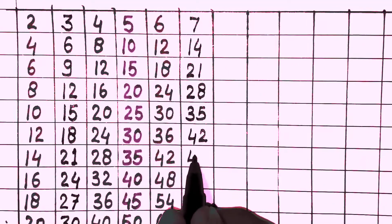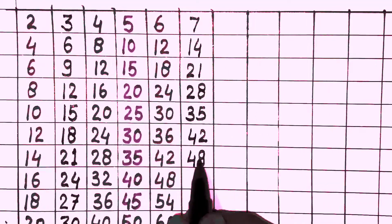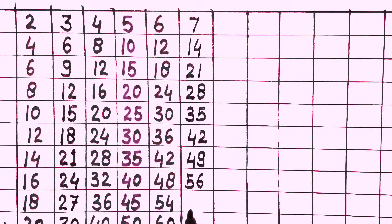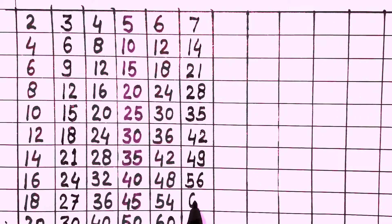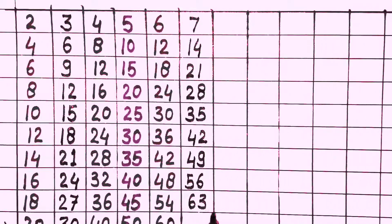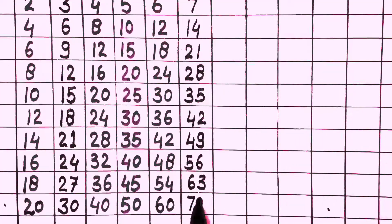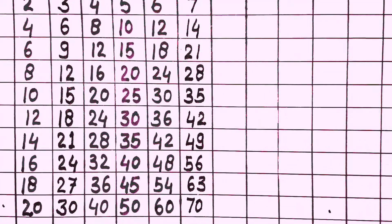7 times 6 is 42, 7 times 7 is 49, 7 times 8 is 56, 7 times 9 is 63, 7 times 10 is 70. Next, table of 8.